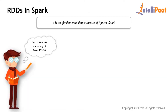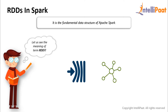Let us understand the concept of RDDs in Spark. When processing data over multiple jobs, we need to reuse and share data, which can be achieved through in-memory data sharing, which is faster than network and disk sharing. RDD stands for Resilient Distributed Dataset and is the fundamental data structure of Apache Spark. By resilient, we mean fault-tolerant — it can recompute missing or damaged partitions in case of a node failure using the RDD lineage graph. Data is distributed since it resides on multiple nodes, and dataset represents the records you work with.